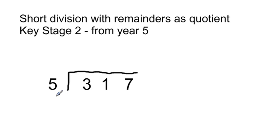So again, we've got 317 divided by 5, but we're going to write the remainder as a quotient. That basically just means we're going to write the remainder as a fraction.